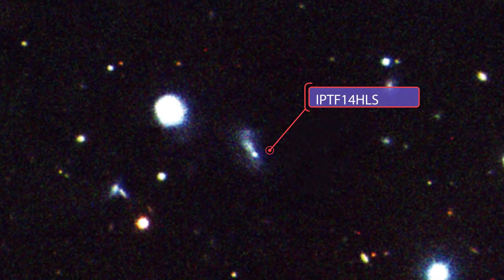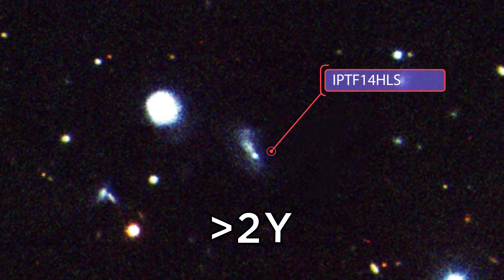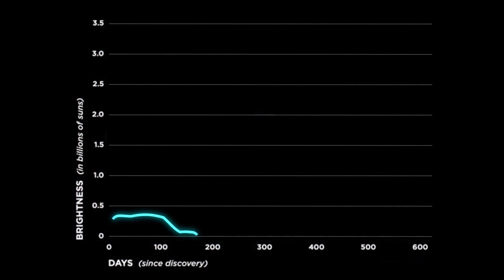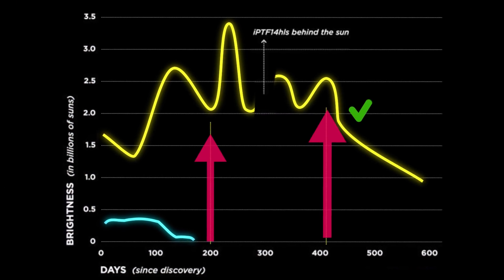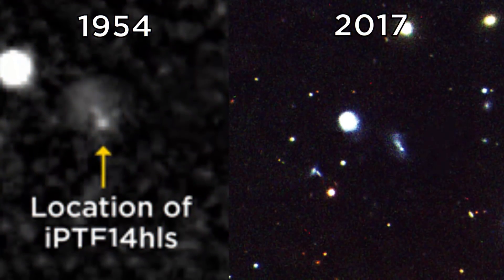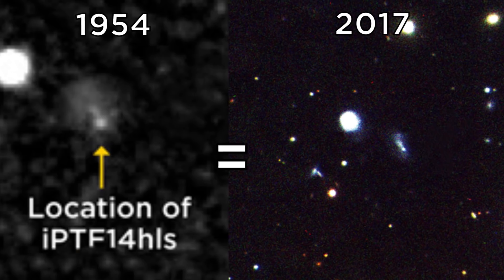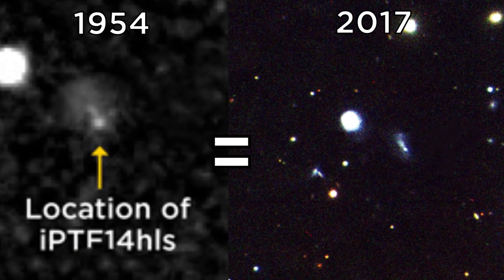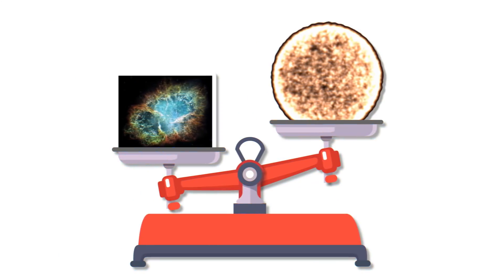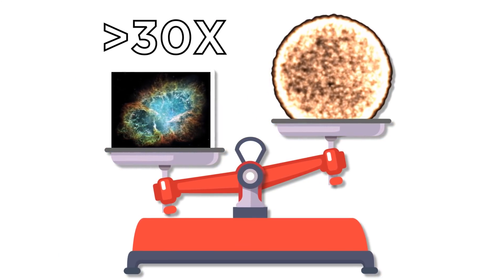But the IPTF-14HLS supernova has been around for at least two years. And instead of gradually fading, it got brighter around 200 and 400 days in. And way back in 1954, researchers spotted a supernova in the same area. If it turns out to be the same supernova, then this zombie star has been exploding for more than 60 years, and maybe over 30 times the mass of Earth's sun.